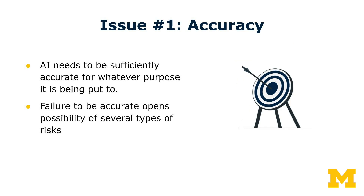The first of these factors we're going to discuss is accuracy. Artificial intelligence information needs to be sufficiently accurate for whatever purposes it's being put to. If AI is gathering information about some particular occurrence or an individual, knowing that that information is correct and verifying it in some way is important.